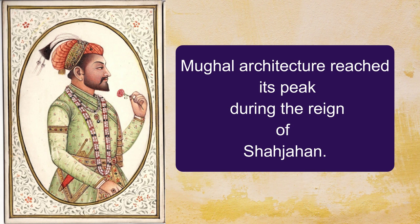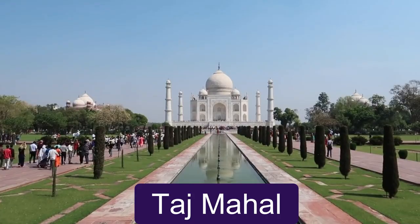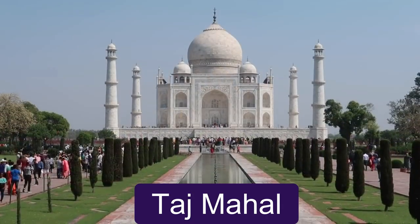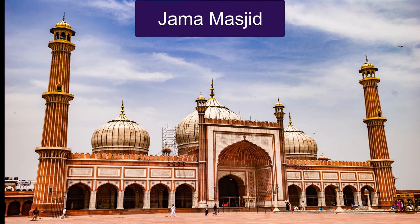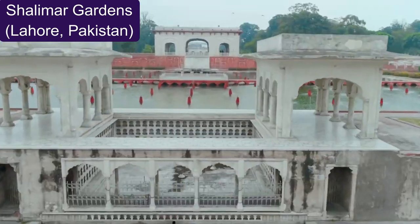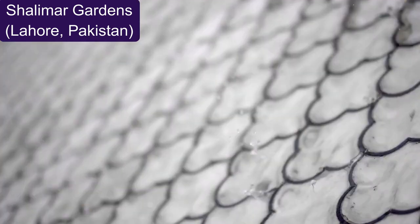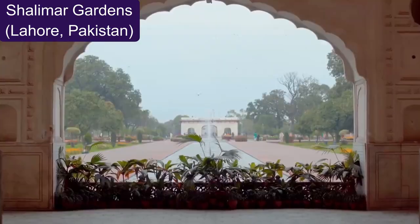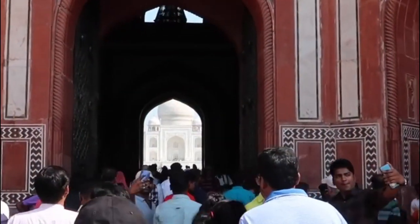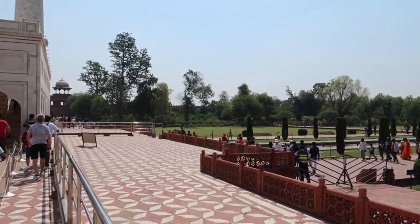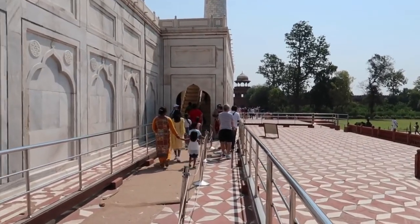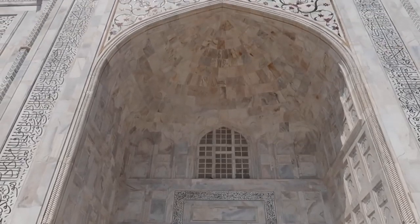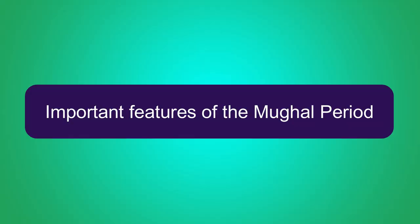Mughal architecture reached its peak during the reign of Shah Jahan. He constructed the beautiful and magnificent Taj Mahal, the Jama Masjid, Shalimar Gardens of Lahore and many other beautiful monuments. Thousands of tourists visit India to see these grand and splendid creations.